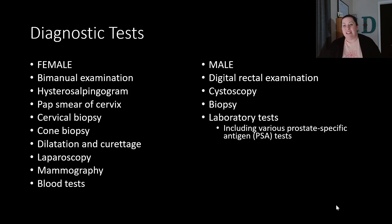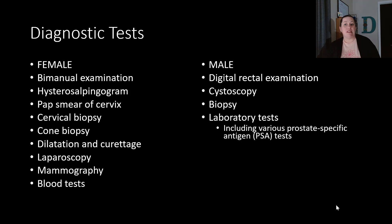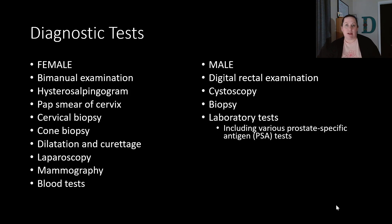For males, diagnostic tests include a digital rectal exam and a cystoscopy, where a camera is passed through the urethra and penis to the bladder, also allowing examination of parts of the reproductive system. Biopsies can check for tumors or cancer. Laboratory tests include prostate-specific antigen (PSA) tests to look for things like prostate cancer.